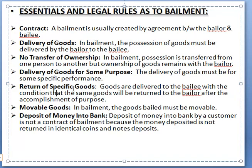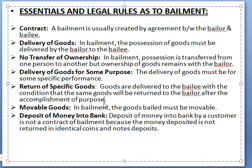Then there is return of specific goods. Goods are delivered to the bailee with the condition that the same goods will be returned to the bailor after the accomplishment of the purpose. The definition of bailment: bailment is the delivery of goods by one person to another for some purposes, upon a contract that when the purpose is accomplished, the goods shall be returned.